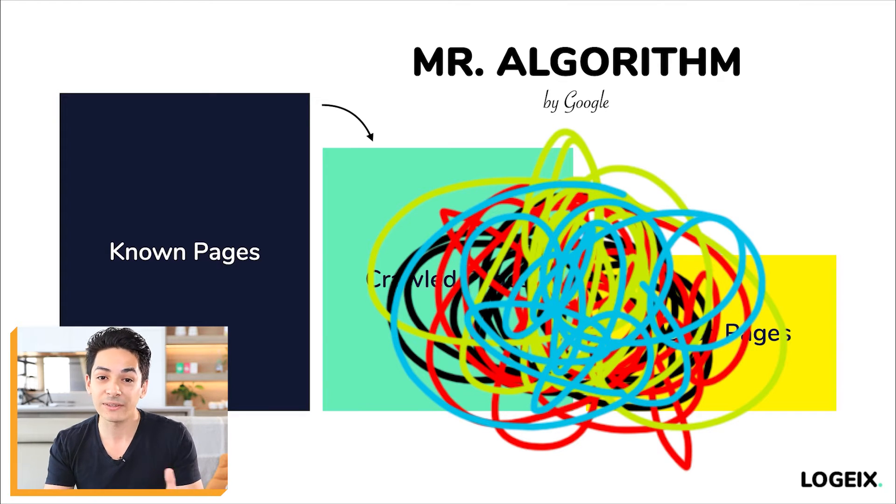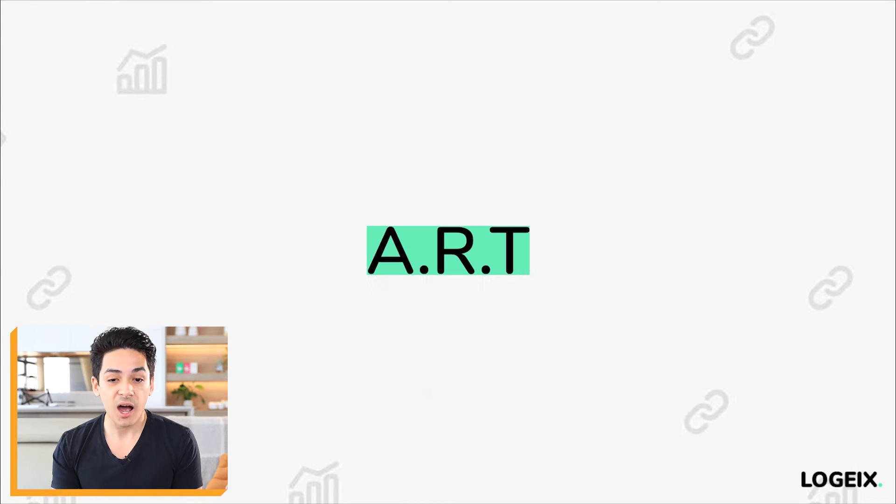Now it is true there are hundreds if not thousands of factors involved in ranking a web page, but in reality it really comes down to three factors. Those factors are authority, relevance, and trust — and how I like to remember this is just the word ART. Is your website an authority on this topic? Is it relevant to the keyword someone is searching? And are you a trustworthy source of information? The hundreds of ranking factors pretty much all fall into measuring those three things.